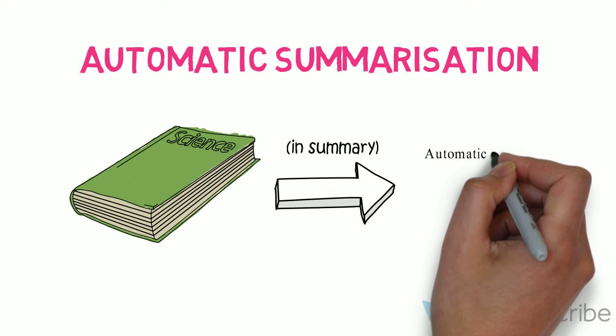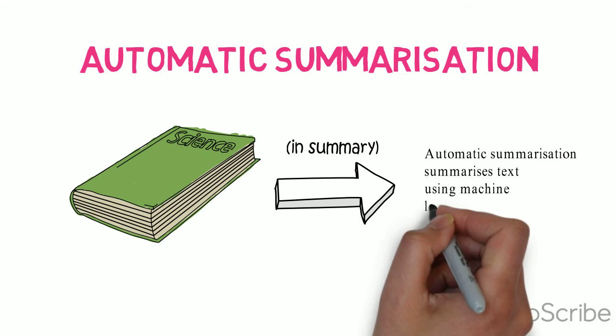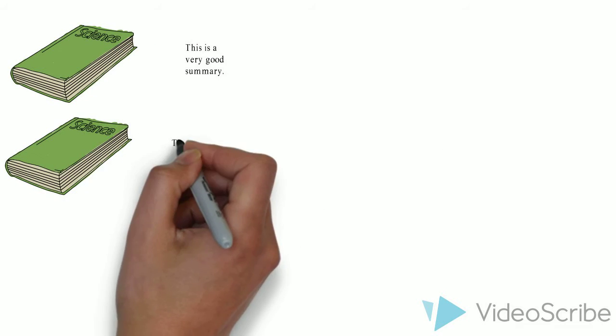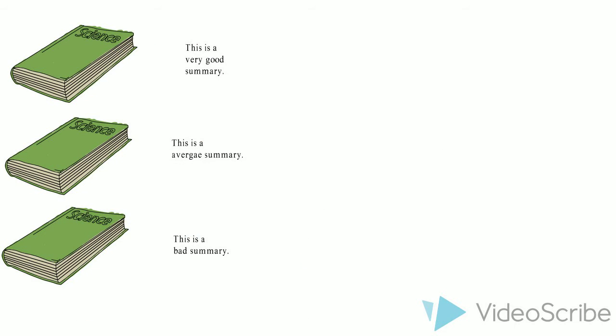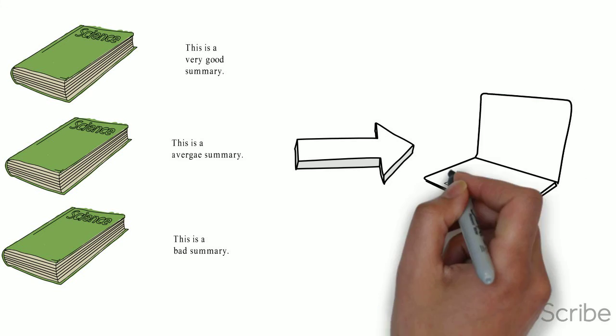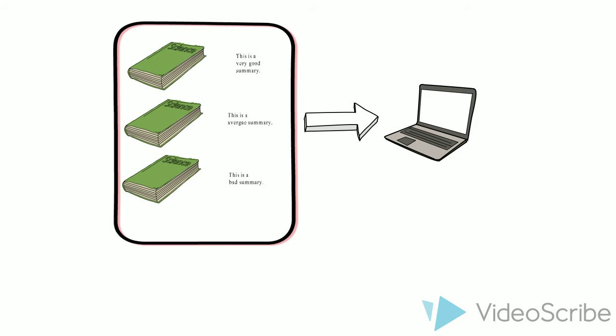This can be done using supervised machine learning. Let me explain what that is. Imagine we start with many large documents of text and many handwritten summaries for each of those texts and then input all of this data into the computer. We are giving it what is called labeled data, i.e., data that the computer knows explicitly each time what is a good summary and what is not.